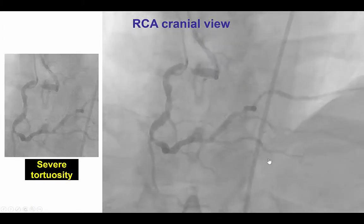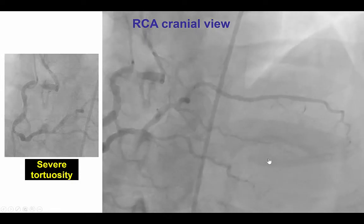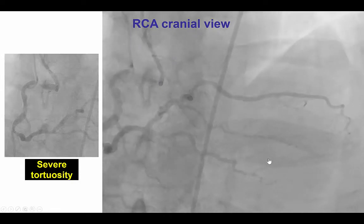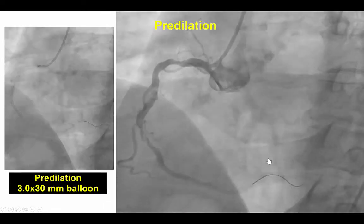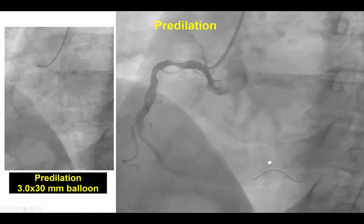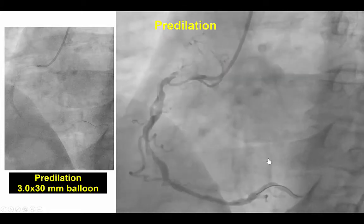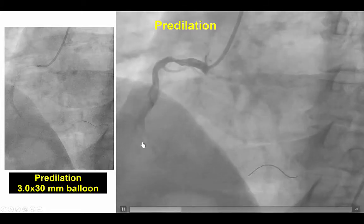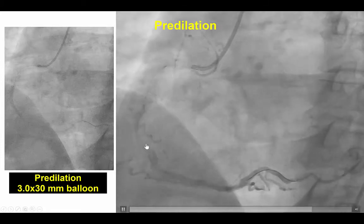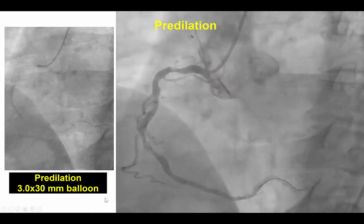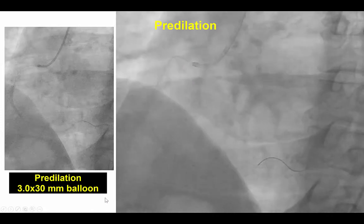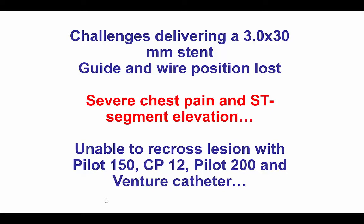We decided to proceed with percutaneous coronary intervention. The right coronary was engaged with the JR4 guide catheter and wired with a standard workhorse guide wire. During predilation there was a dissection in the mid part of the right coronary artery after a 30 mm balloon, which however had good expansion. We did have significant challenges delivering a stent, and during this process the guide was lost as was the wire position.